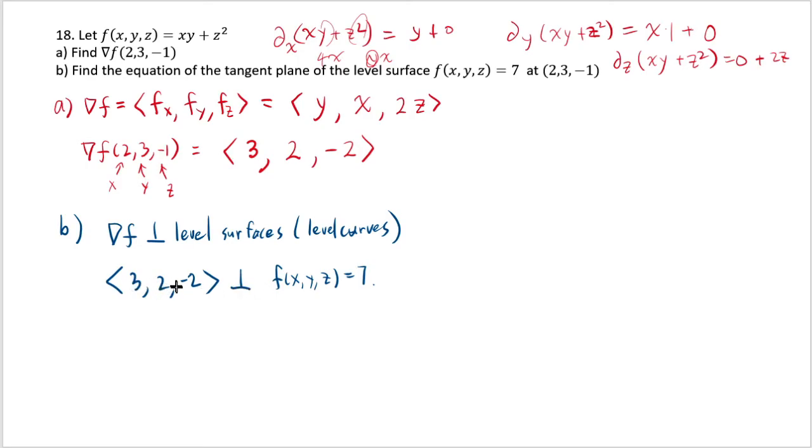Because 2, 3, negative 1 is indeed on this level curve. You can check that by plugging in 2, 3, and negative 1 is equal to 7.